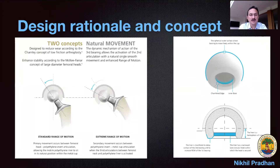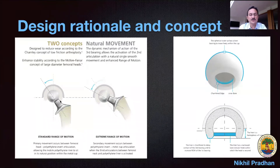There are two concepts combined in a DM hip: the Charnley concept of low friction arthroplasty using a small head size, and the McKee-Farrar principle of large-on-large articulation which reduces the rate of dislocation. During the standard range of motion for walking, it is the smaller articulation that comes into play, and only when the neck impinges onto the larger poly do you get the extreme range which leads to the large-on-large articulation.